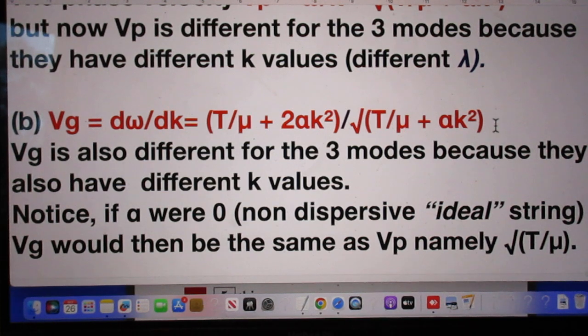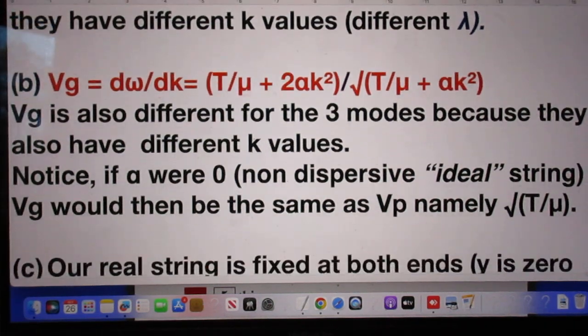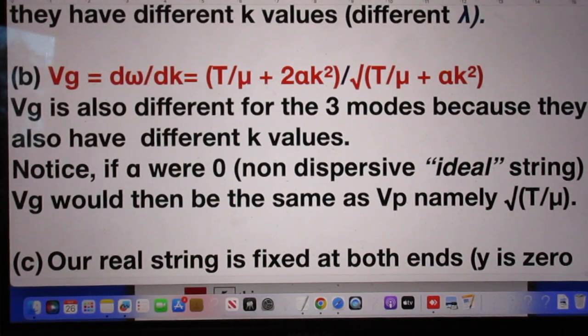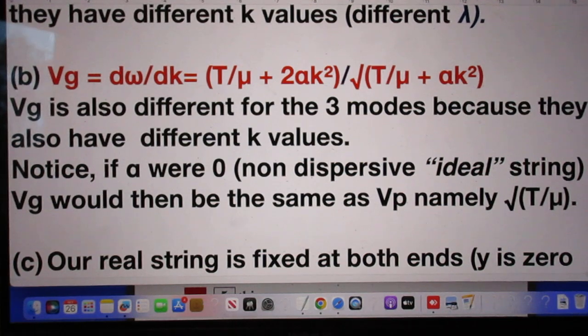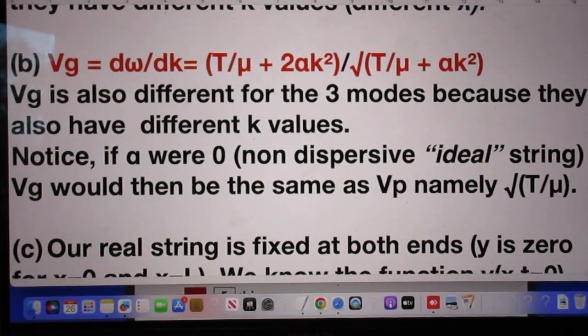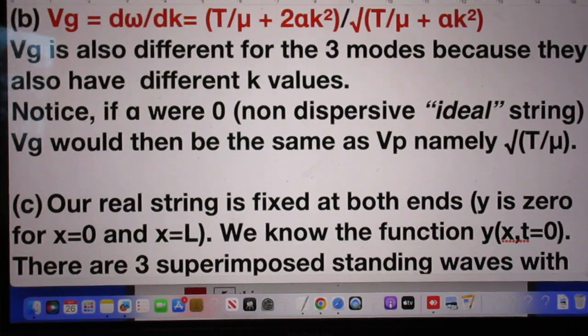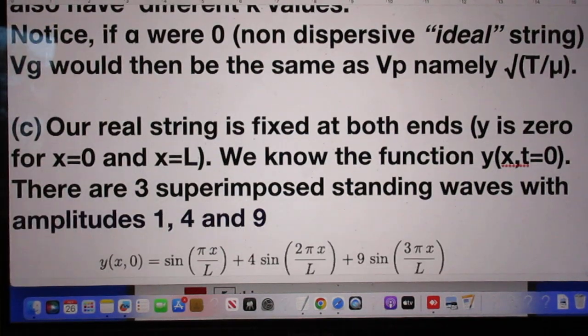The group velocity is also different for the three modes because they have different k values. Notice, however, if alpha were zero, that would be a non-dispersive ideal string, then the group velocity would be the same as the phase velocity. They are both the square root of T divided by μ.